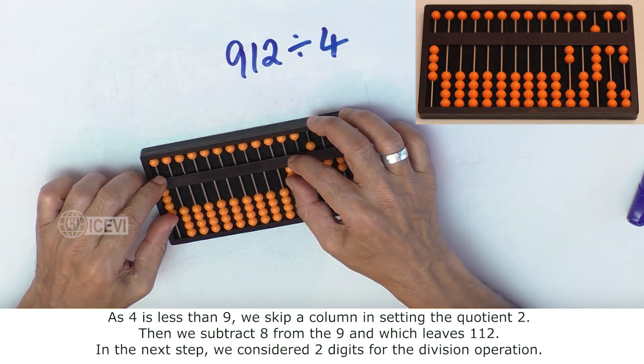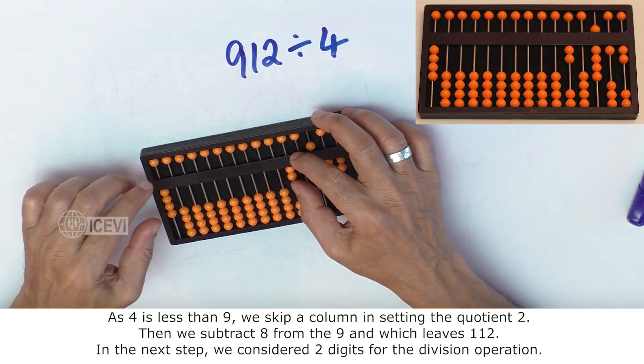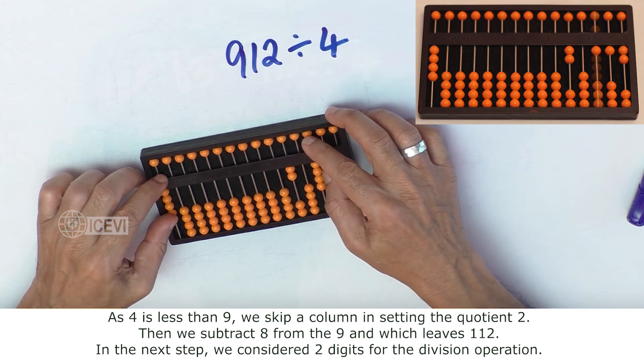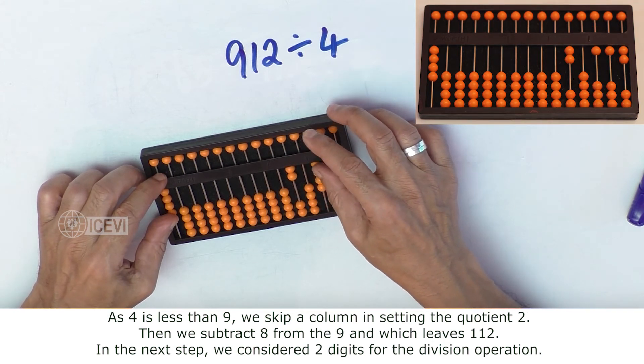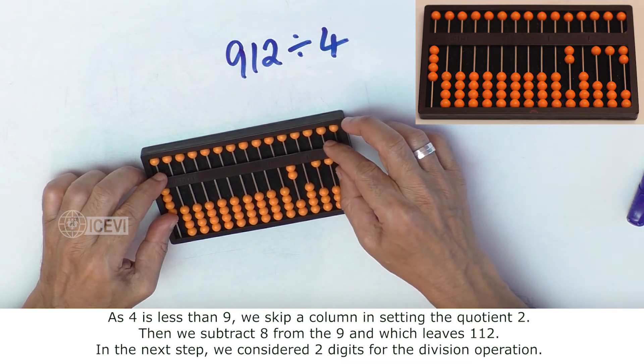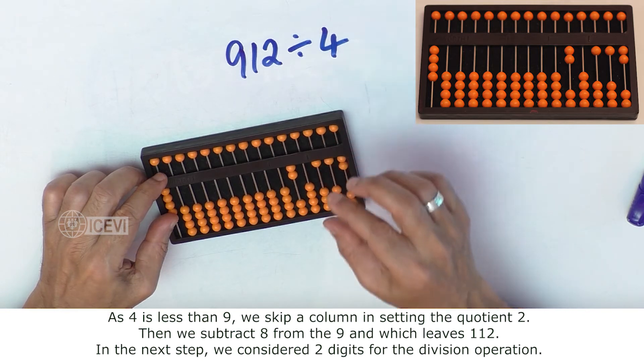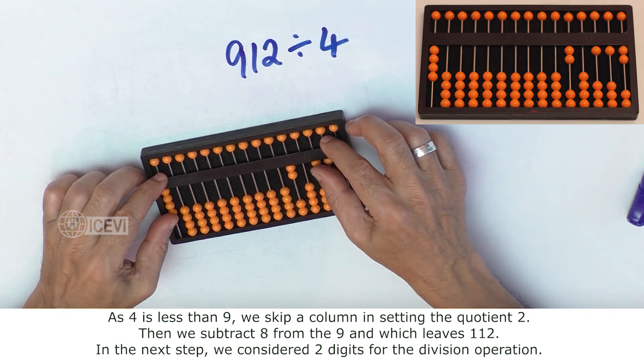Then we subtract 8 from the 9, that is 2 into 4 is 8. We subtract 8 from the 9. Then we get 112 in the dividend. In the next step we consider two digits of the division operation.